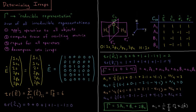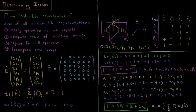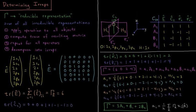Notice that the character of this reducible representation under E is 6, a six-dimensional reducible representation, and all the coefficients add up to 6: 3+1+2=6. That's because all of these are one-dimensional irreducible representations. If there were an E irrep (two-dimensional), it would count for 2; a T irrep (three-dimensional) would count for 3. The sum of the dimensionalities of all irreps adds up to the dimensionality of the reducible rep.